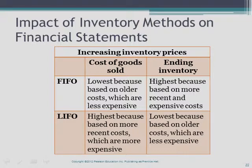When inventory unit costs change, the various inventory methods produce different cost of goods sold figures and therefore different gross profit and net income amounts, and the balance sheet inventory amount will also differ. When inventory prices are increasing, FIFO results in the lowest cost of goods sold because it uses older, less expensive costs, resulting in higher gross profit and higher net income. On the balance sheet, FIFO results in a higher inventory balance. For LIFO, cost of goods sold is highest because it is based on more expensive recent costs, resulting in lower gross profit and net income, and a lower inventory balance on the balance sheet.